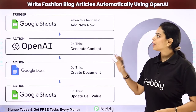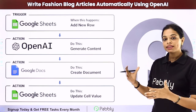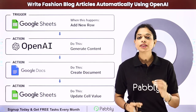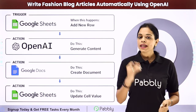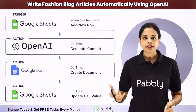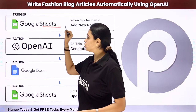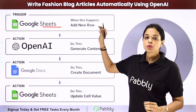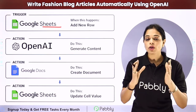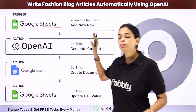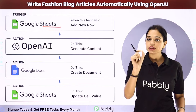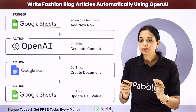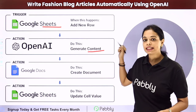In this video we are going to see how to write fashion blog articles automatically using OpenAI, which is an artificial intelligence and deployment company that helps you in generating human-like content. So let's say that you have to write certain fashion articles and you have got certain titles in any of your spreadsheets. Here I have taken the example of a Google Sheet. So every time a new row is added in your spreadsheet as a new title, then automatically with the help of OpenAI you should be able to generate content. Then you want to create a document in the name of the title of your article and then the same document should be appended with the content that you have created.